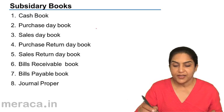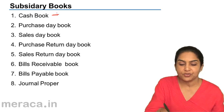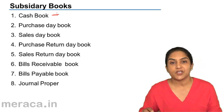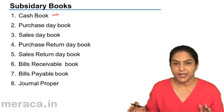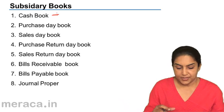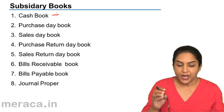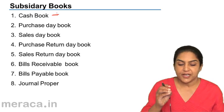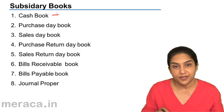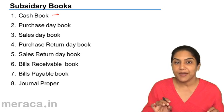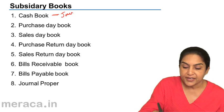Cash book — what are the subsidiary books? One is the cash book. The journal is basically being split into eight kinds. Though we record all transactions, all cash and bank transactions will be first recorded in the cash book. Therefore, it becomes a book of original entry and a journal.